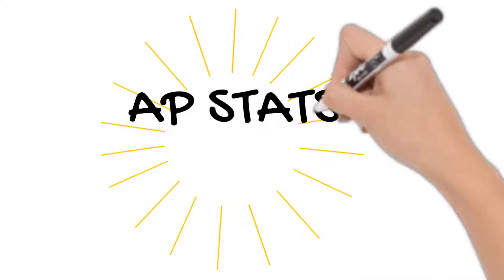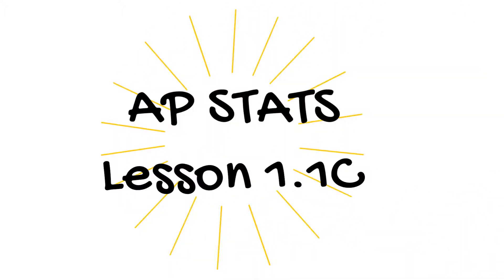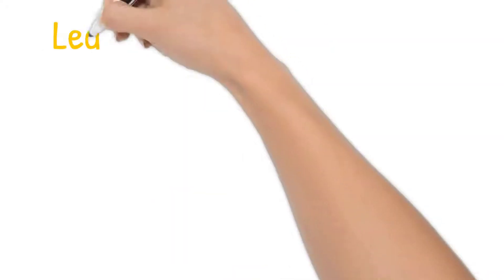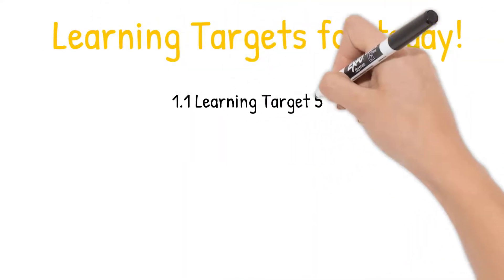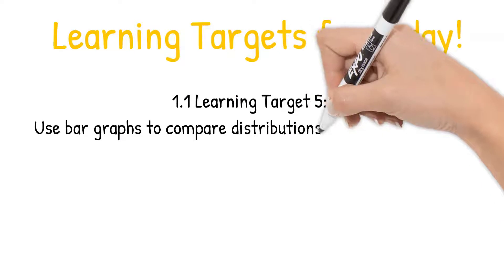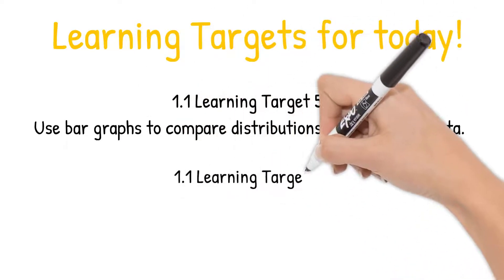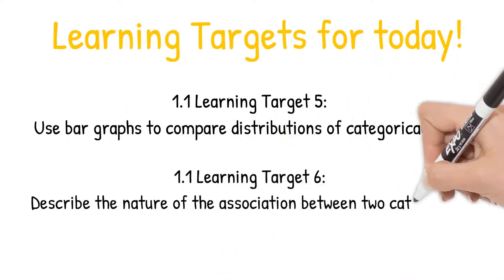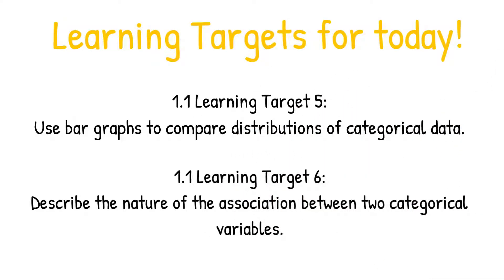Hi, this is Mrs. Morita. Welcome to AP Stats, Lesson 1.1. Our learning targets for today are learning targets 5 and 6: use bar graphs to compare distributions of categorical data, and describe the nature of the association between two categorical variables.